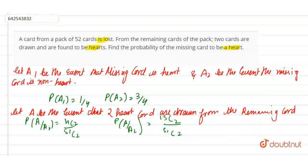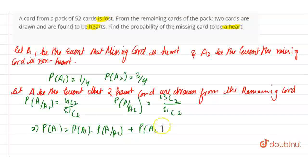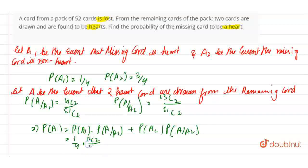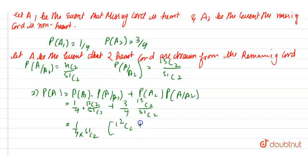Now it implies that P(A) = P(A1) × P(A given A1) + P(A2) × P(A given A2), which equals 1/4 × 12C2 divided by 51C2, plus 3/4 × 13C2 divided by 51C2. So now it is equal to 1 divided by (4 × 51C2) × (12C2 + 3 × 13C2).